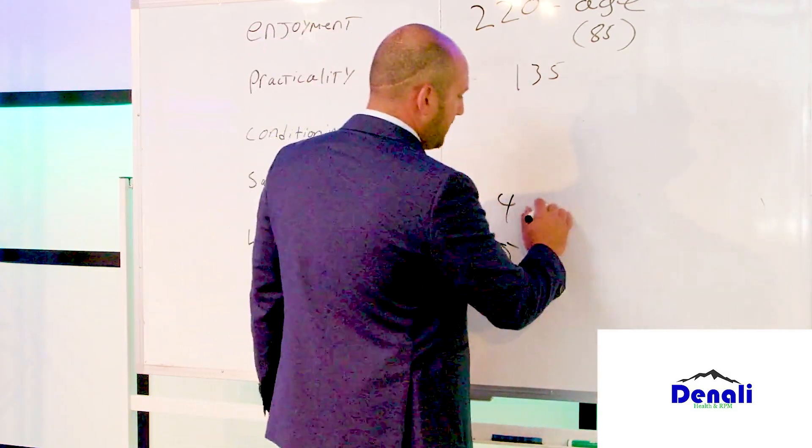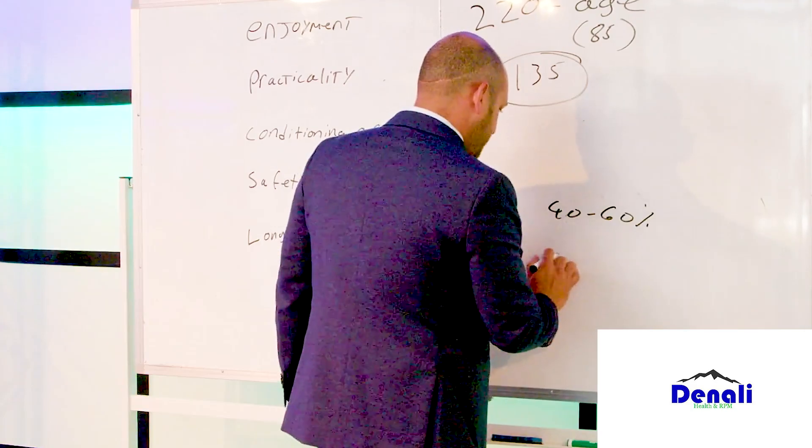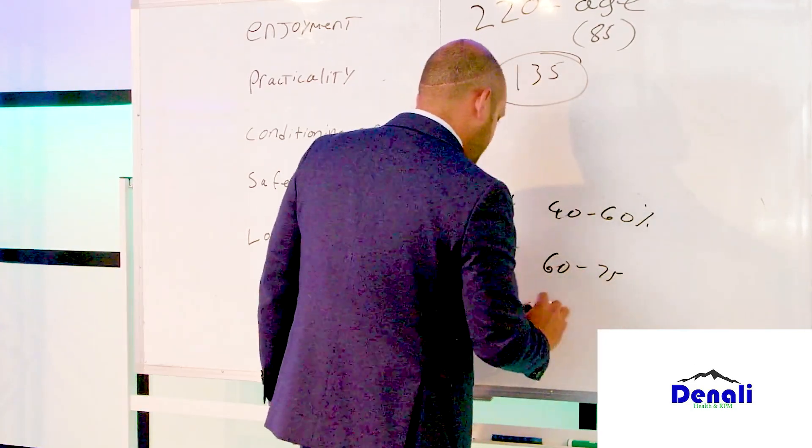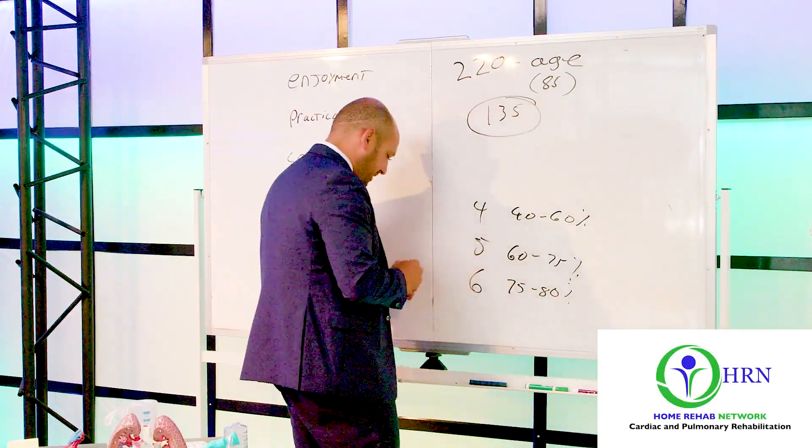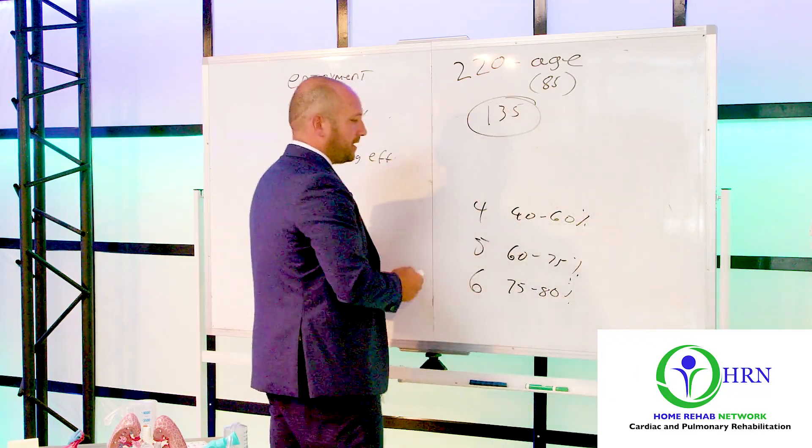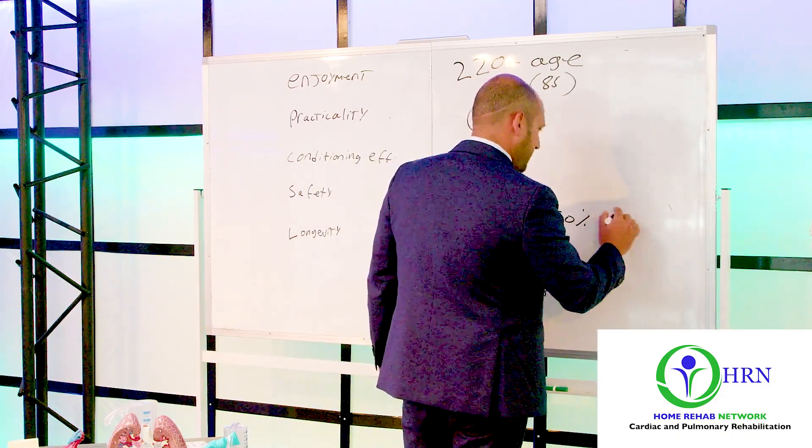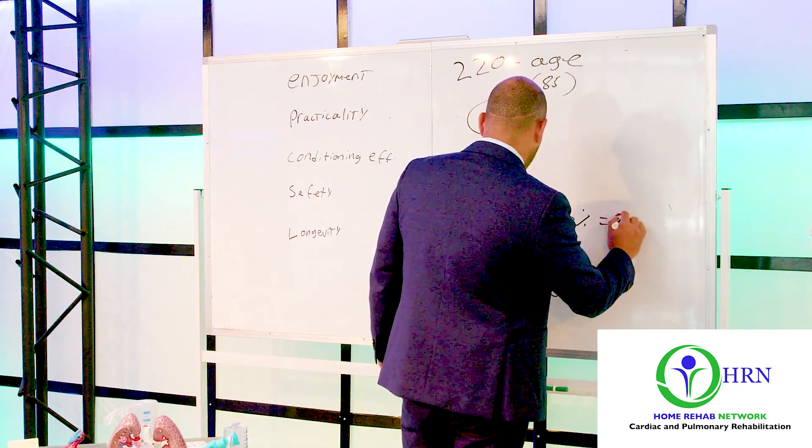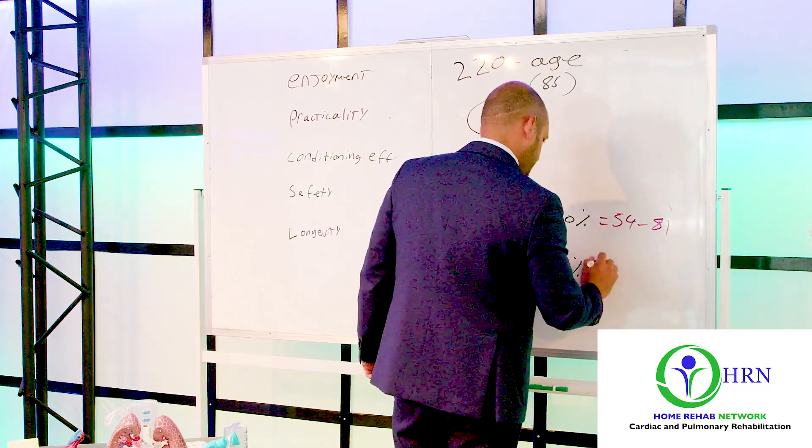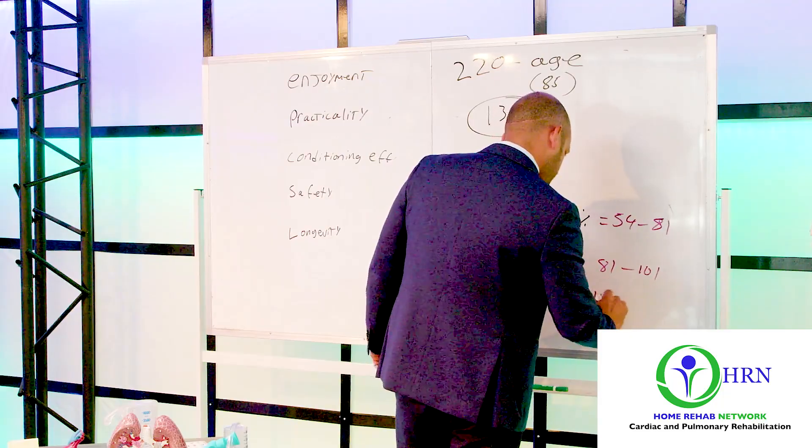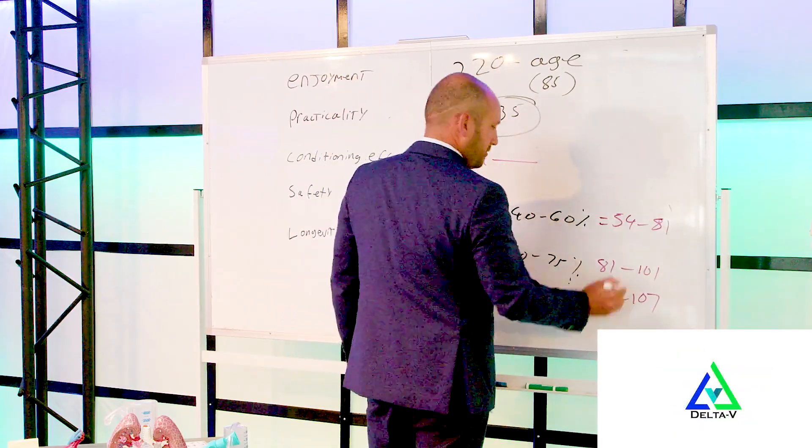4 is the least one. That's going to be 40 to 60% of my maximum heart rate if I was 85. And at 5, it's 60 to 75%, and 6 is 75 to 80% of my maximum heart rate. If I plug in these numbers, 0.4 times 135 gives me a pulse rate of 54, and 60% is 81. This is 81 to 101, and then 101 to 107. So my pulse rate zone is 54 to 107.